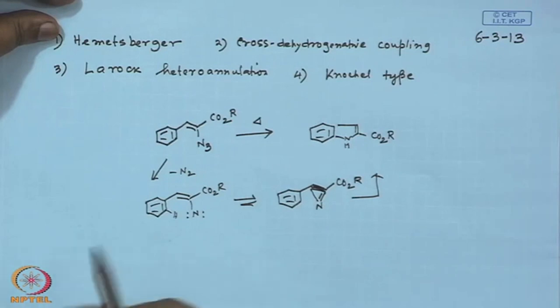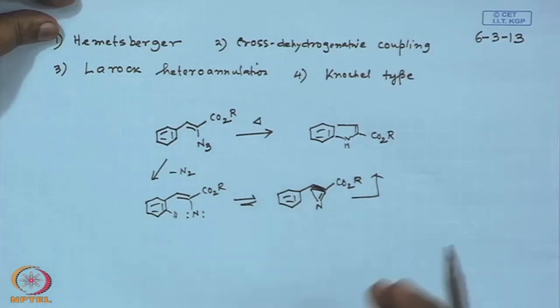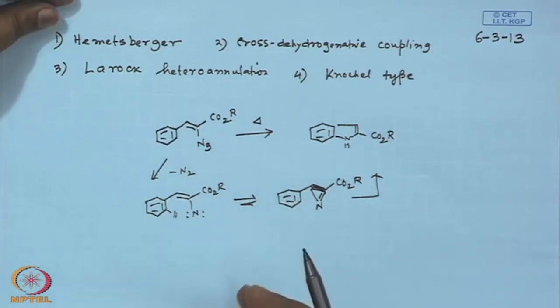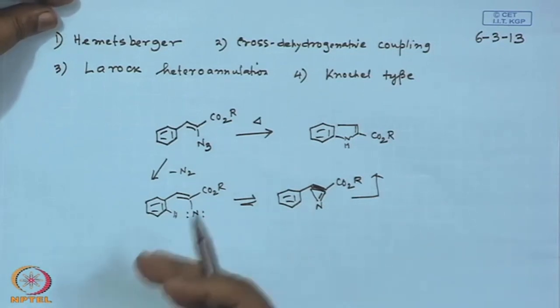One could question why the nitrene does not directly insert into the C-H bond of the benzene ring system. All that possibility is ruled out, as you will see in the next example. There are quite a few variants where you can start from azirine and go on to make indole.